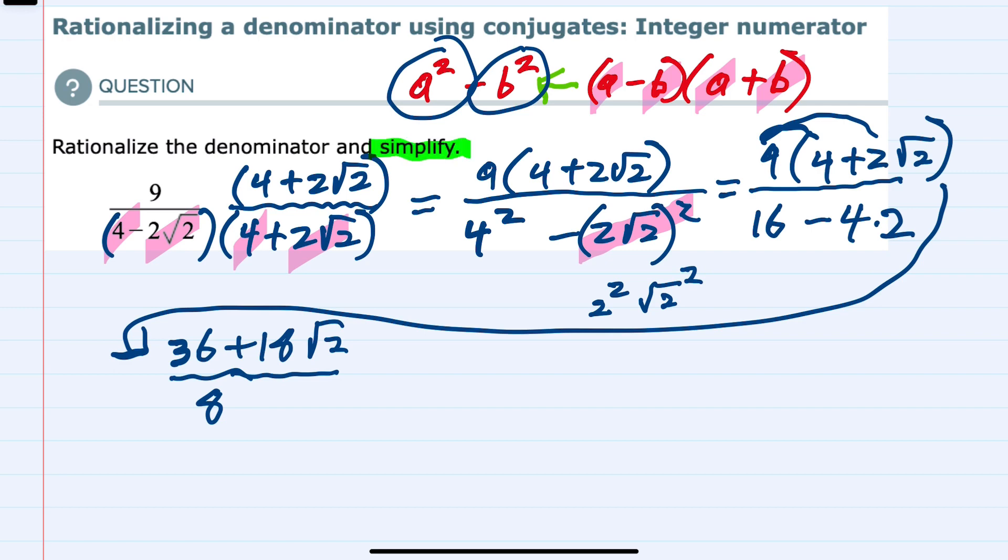But the instructions also say that we need to simplify. And to simplify here, we can cancel terms in the numerator and the denominator. But since I have addition in the numerator, I'm going to need to factor out anything in order to cancel it with that 8 in the bottom.